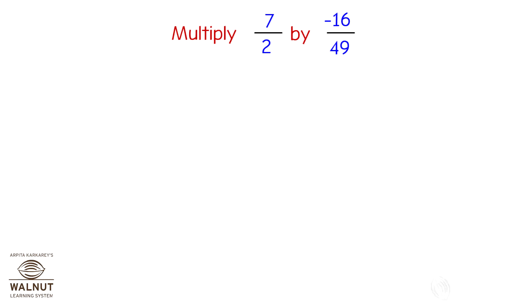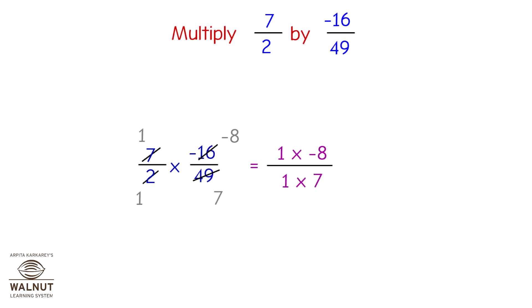Multiply 7/2 by (-16)/49. That is 7/2 × (-16)/49 = 1×(-8) / 7 = -8/7.